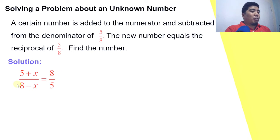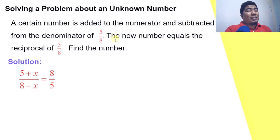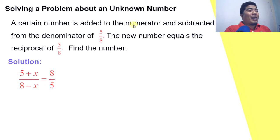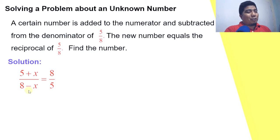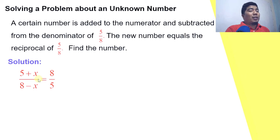So our solution will be: five plus x over eight minus x equals eight over five. The right side becomes eight over five because the problem states that the new number equals the reciprocal of five over eight. Now what we need to do is solve for the value of x.